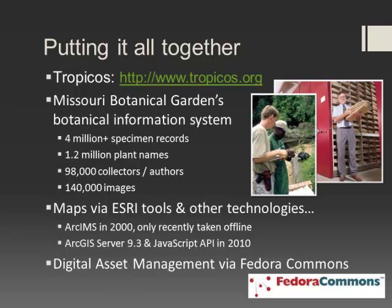Tropicos is the Missouri Botanical Garden's botanical information system. It contains information about the entire lifecycle of a specimen: a biologist goes out in the field, collects a plant, and it comes into a herbarium collection. Everything from who collected it, where they were, what it looks like, elevation — all of that information is written down on paper and then databased as the object enters the museum.